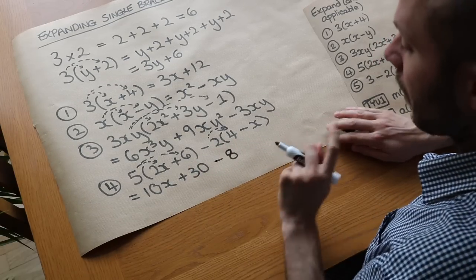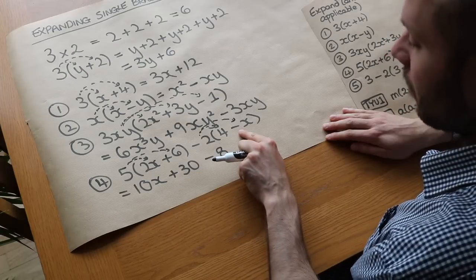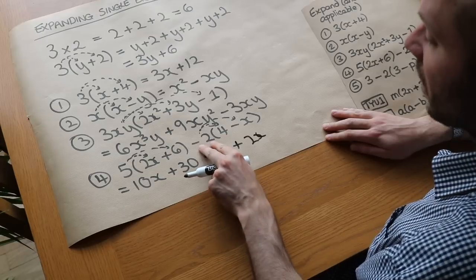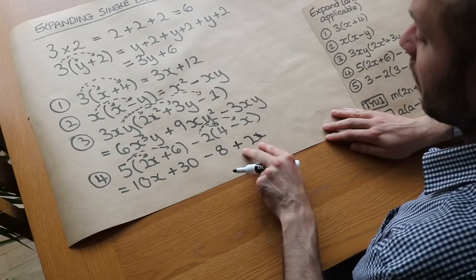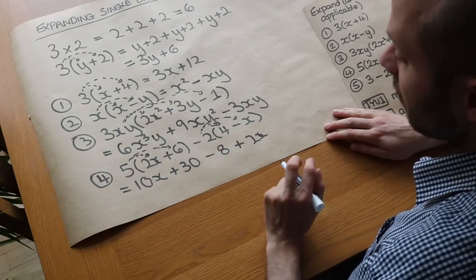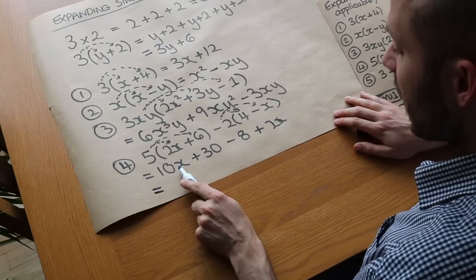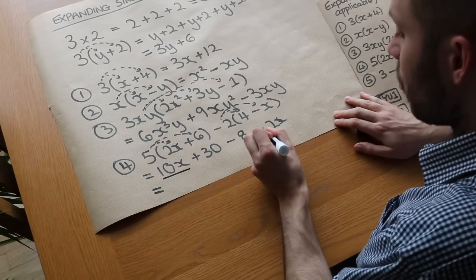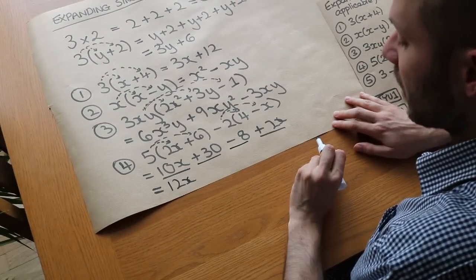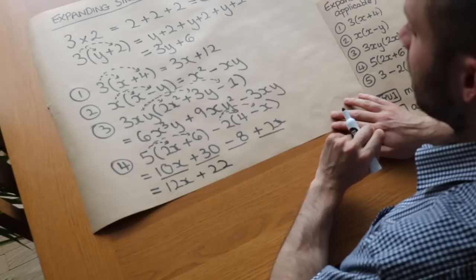And this is where we have to be very, very careful. We've got minus 2 times minus x. So a negative times a negative, that's a positive. So we've got plus, and we know 2 times x is 2x. So when we have minus 2 times minus x, that gives us plus 2x. So be very careful when you're subtracting something that's being expanded, that when you have negative times negative, it's going to be positive. And finally, we can collect like terms here. So we can simplify. Let's collect the x terms first. We've got 10x plus 2x, and that gives us 12x. And we've also got the plus 30, and we're subtracting 8. That gives us plus 22. And that is our expanded and simplified expression.